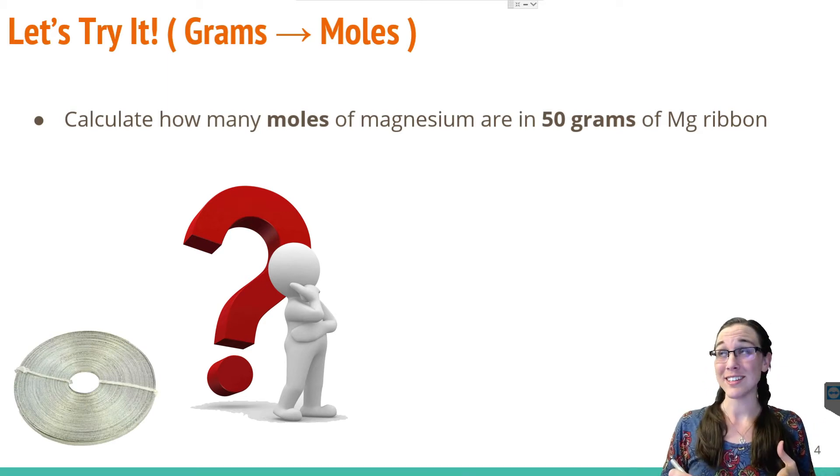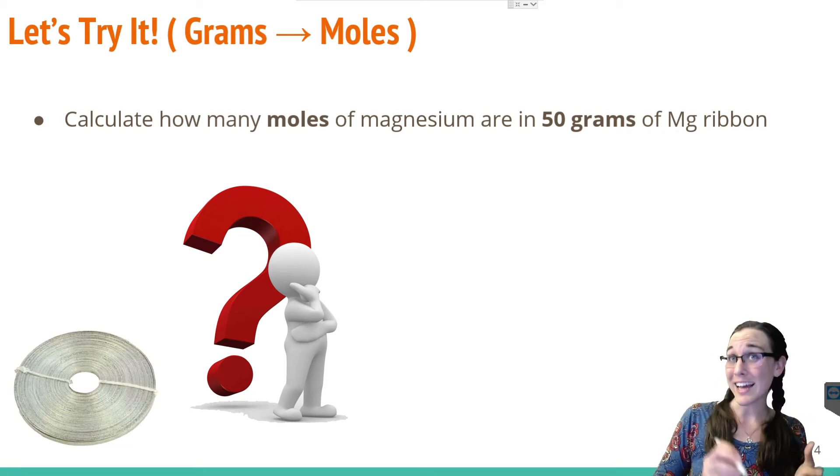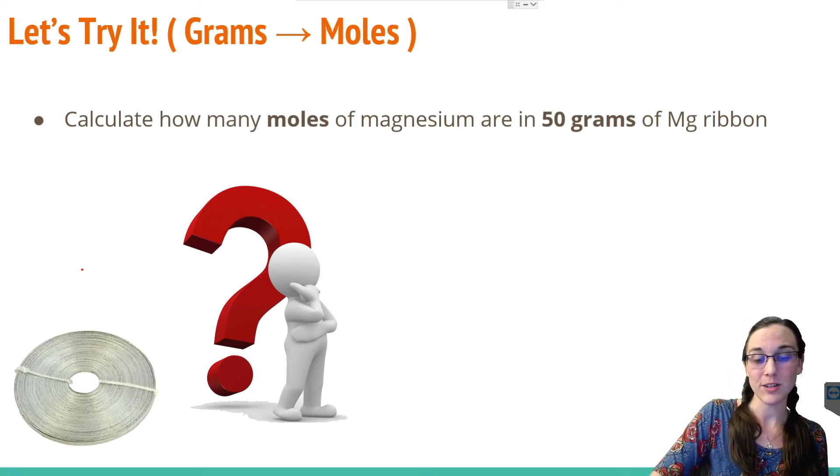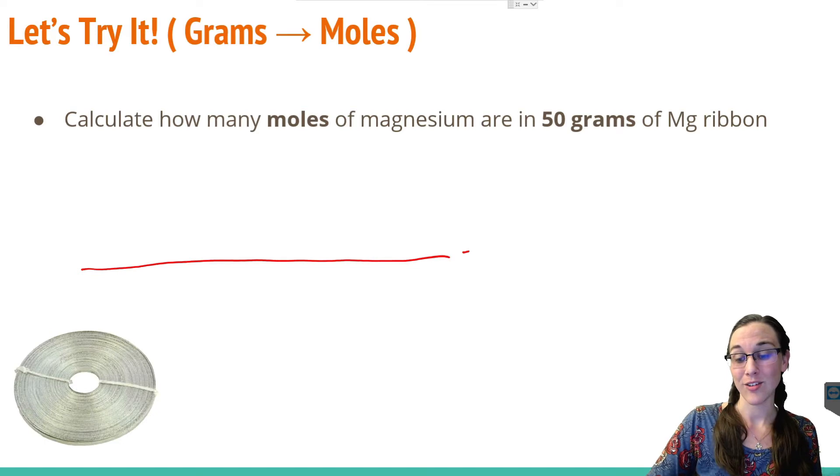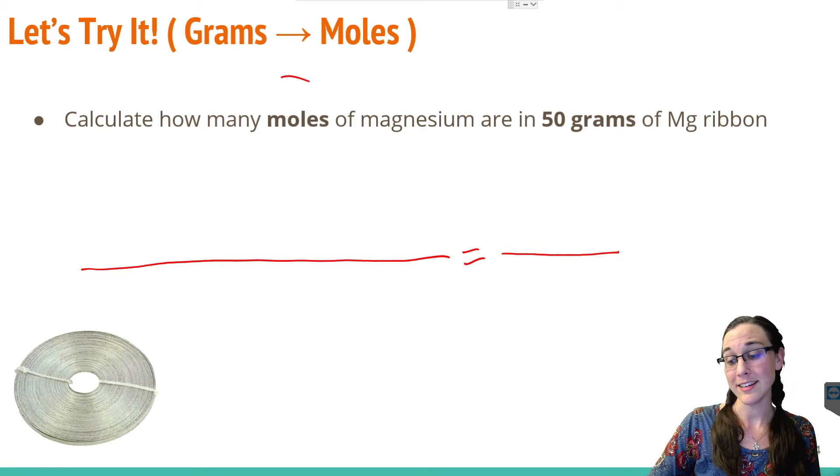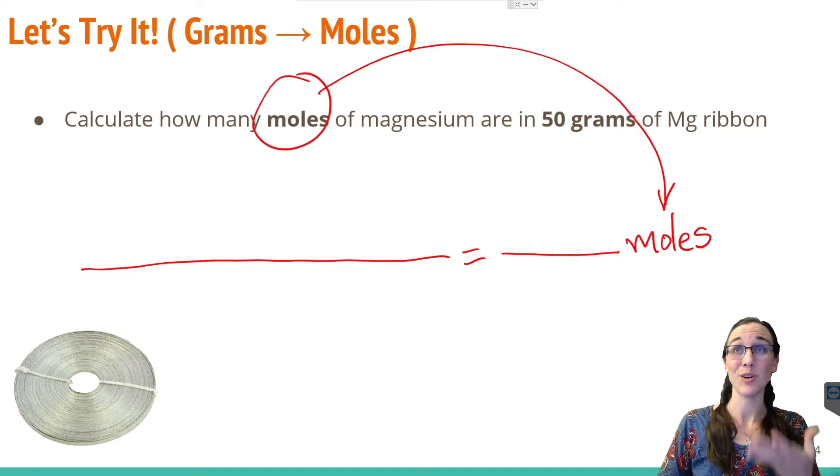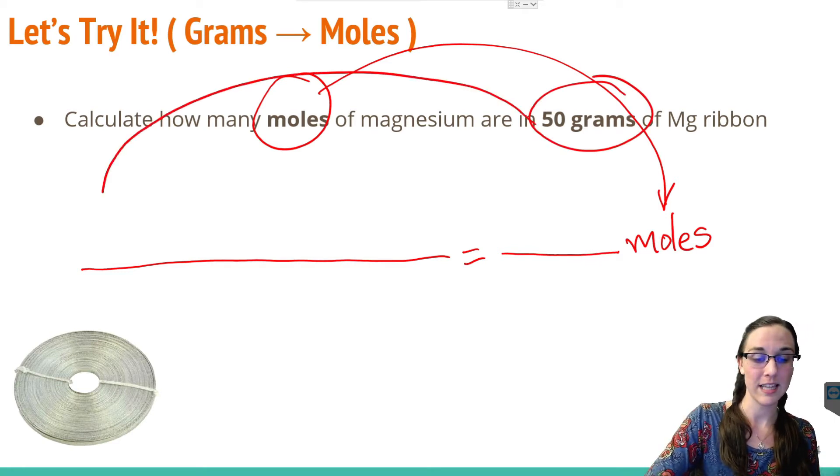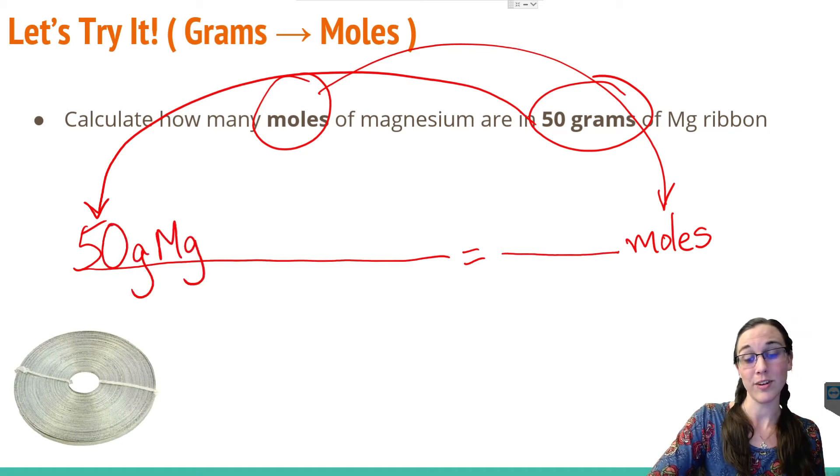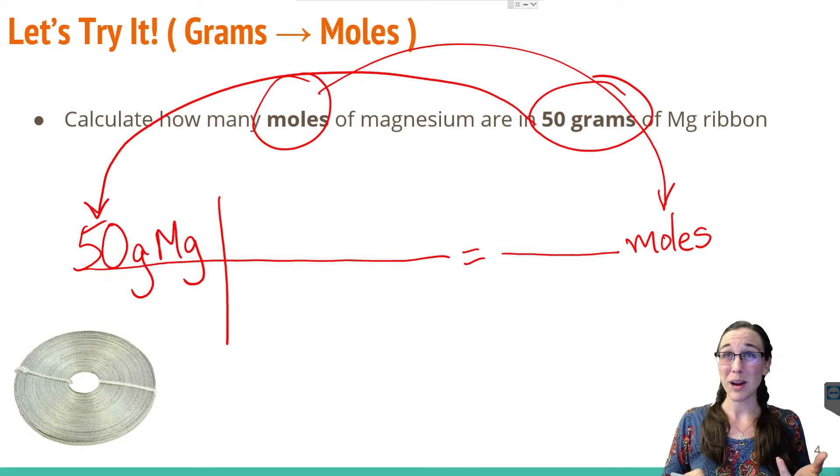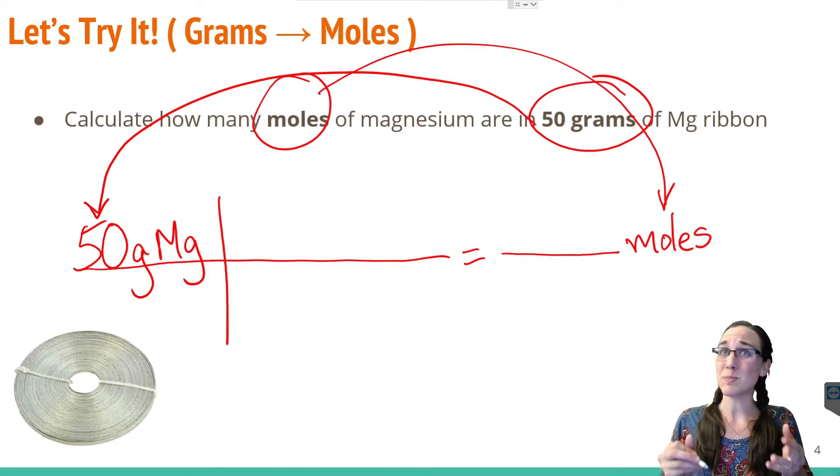So since this is a dimensional analysis problem where we are given something and it's asking for something else, we're going to use our magical line to freedom format and draw an equal sign, leave a space for our answer, put our goal units at the end so we know where we're going. We have to have a goal to know where we're going. And then we'll take our given units and put that as the first thing on top of our line. That would be 50 grams of magnesium. Don't forget to label with the chemical as well. It's not 50 grams of gold, it's not 50 grams of buttons, it's not 50 grams of cat poop. It's 50 grams of magnesium. Be specific.